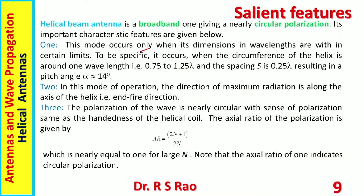The salient features — mainly electrical features — are given here. The helical beam antenna is a broadband one giving nearly circular polarization. The helical beam antenna is the name given to the helical antenna when it is operated in axial mode with circumference C between 0.75λ to 1.25λ and spacing S of 0.25λ, resulting in a pitch angle of 14 degrees.